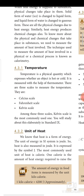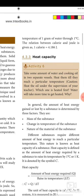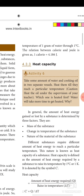Heat is a form of energy. The SI unit of energy is joule, so heat is also measured in joule, expressed by the symbol J. The most commonly used unit of heat is calorie. One calorie is the amount of heat energy required to raise the temperature of one gram of water through one degree Celsius. The relation between calorie and joule is: one calorie equals 4.186 joule.